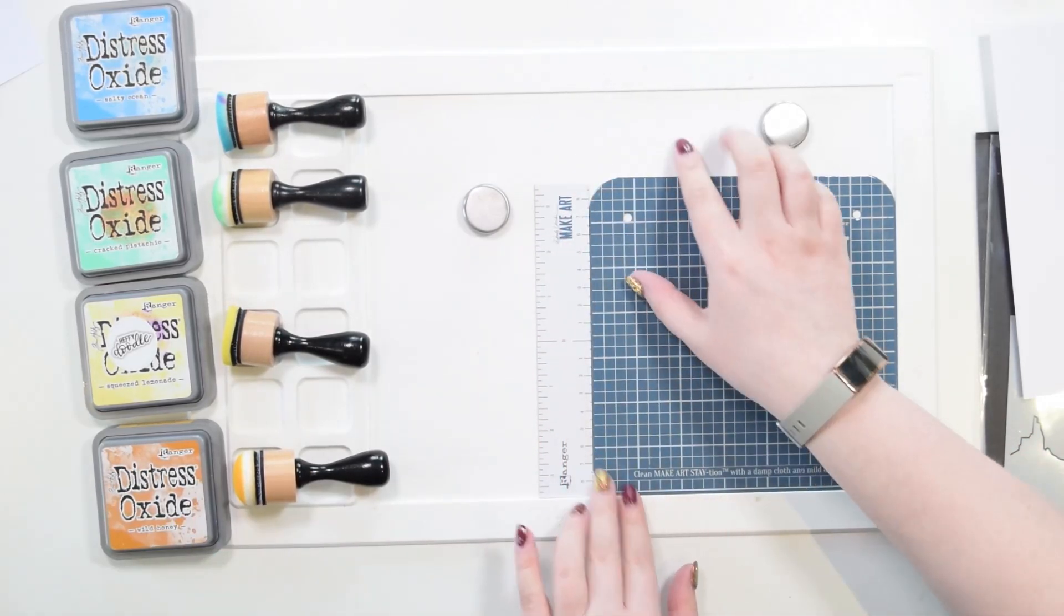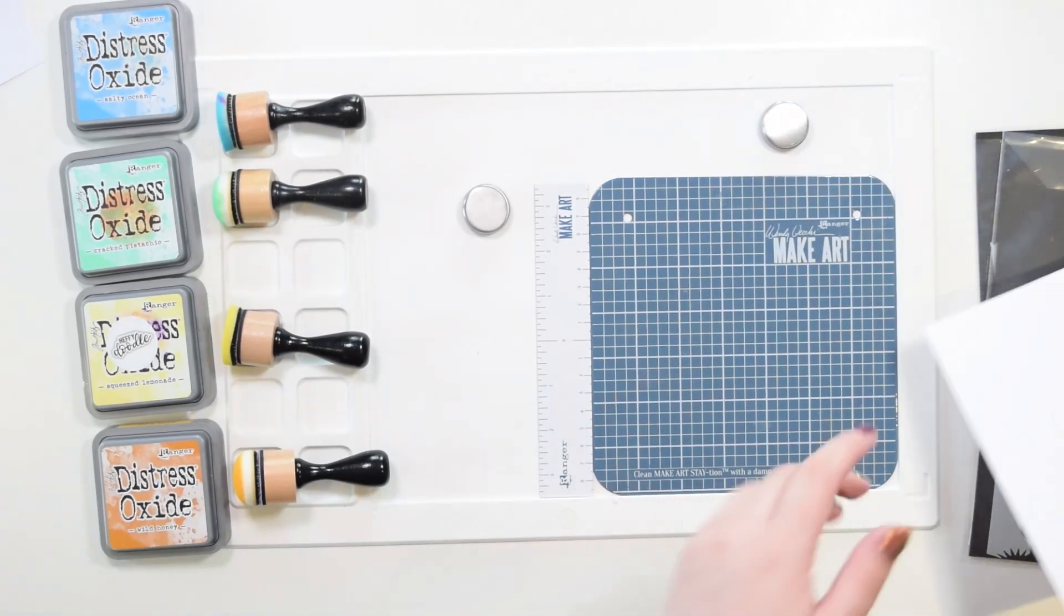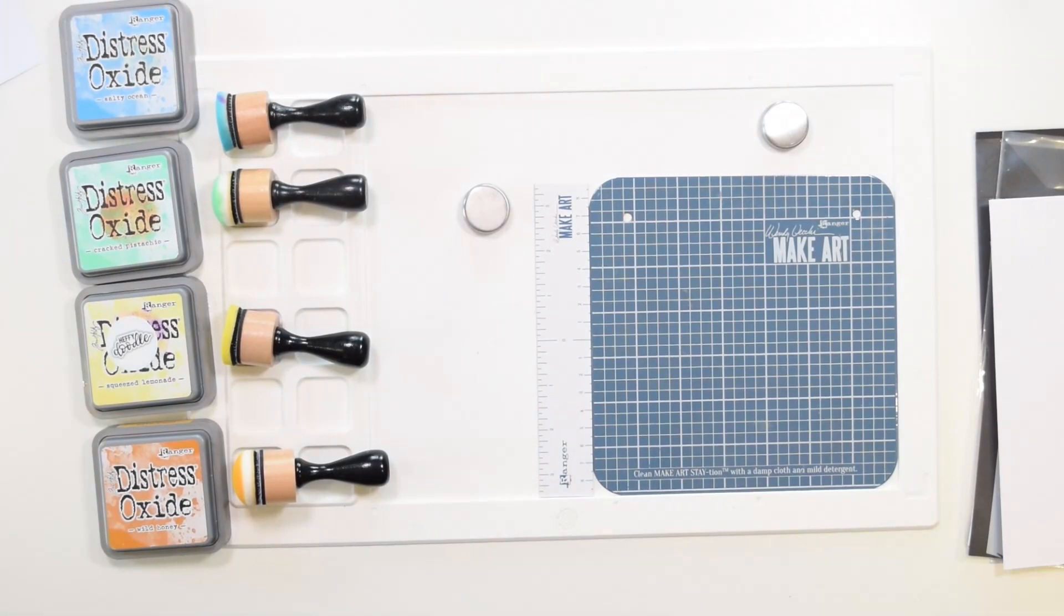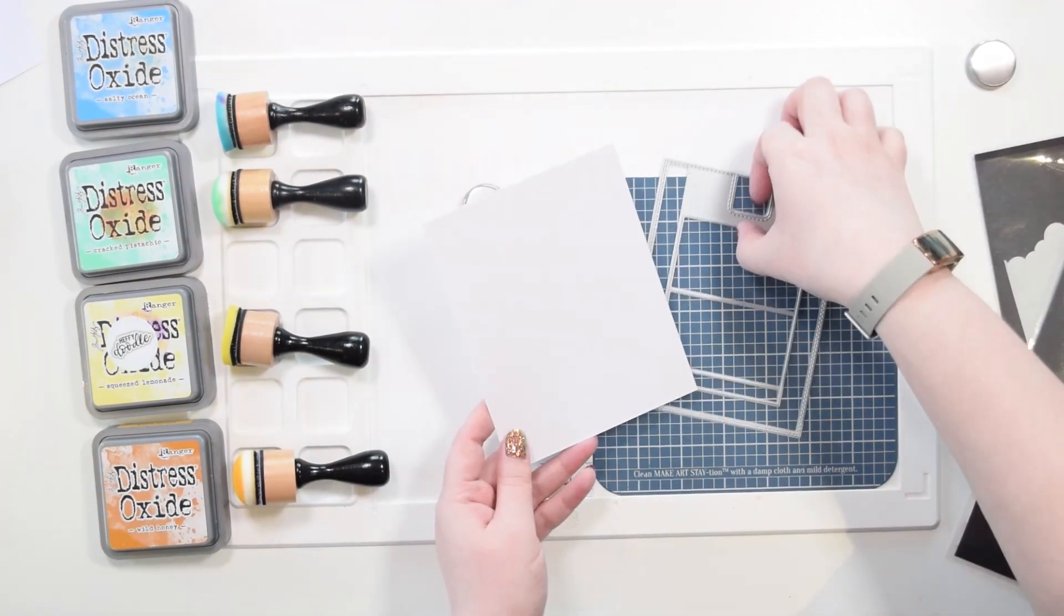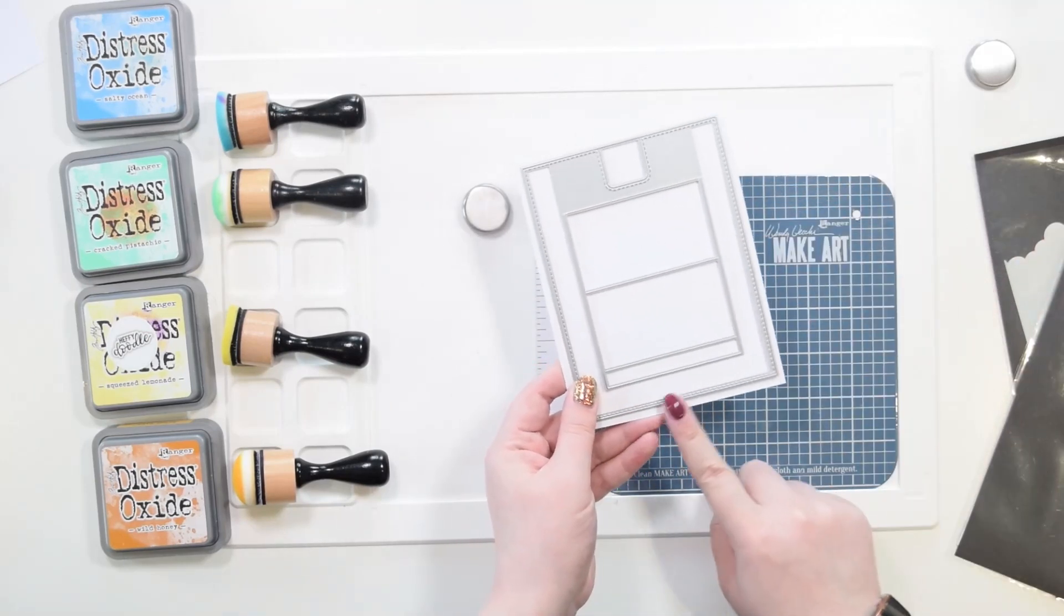You don't have to have your card base match what's on the front of your card when you pull up your slider panel. This is just a personal choice for me for this project. You can really do whatever you'd like. I've trimmed down my piece of watercolor cardstock so it fits my die better.